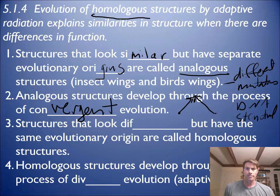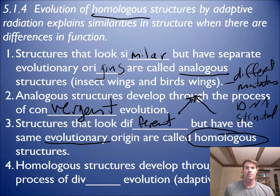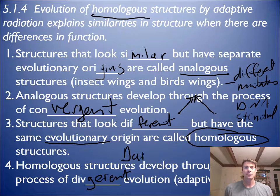Structures that look different but have the same evolutionary origin are called homologous structures, and that happens through divergent evolution — also called adaptive radiation. We saw the diagram of Darwin's finches. That's a good example of divergent evolution.